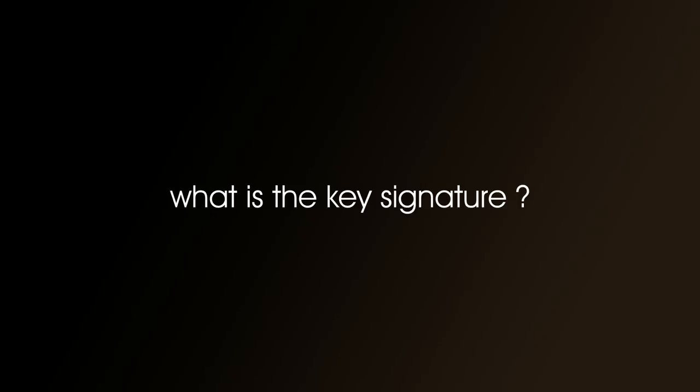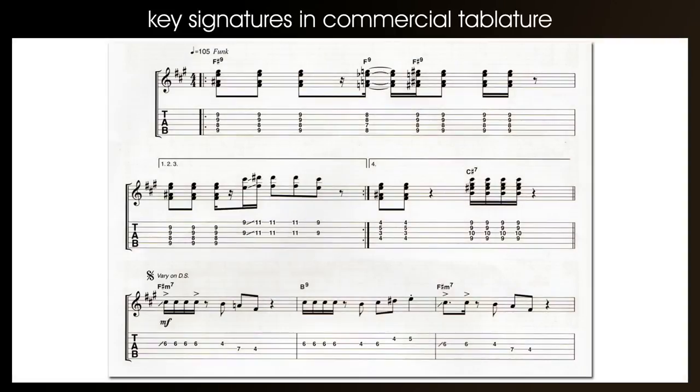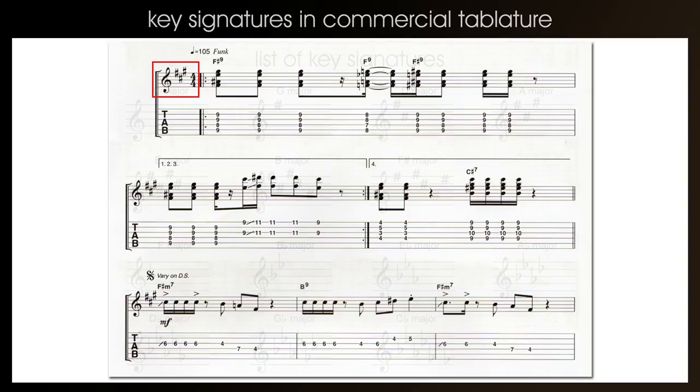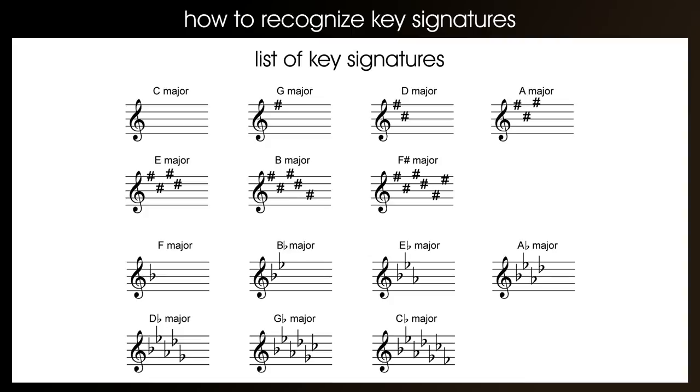What is a key signature? Every single tune has a key signature. And if you've got music above the tab, the key signature appears at the beginning in the first line of the music. Or if you're using commercial tab, it will appear on every line throughout the tune. And the key signature is the number of sharps or flats that appear in that tune. So in this example, it's three sharps. And you can see from this list of key signatures that any tune that appears with three sharps in it is in the key of A major.